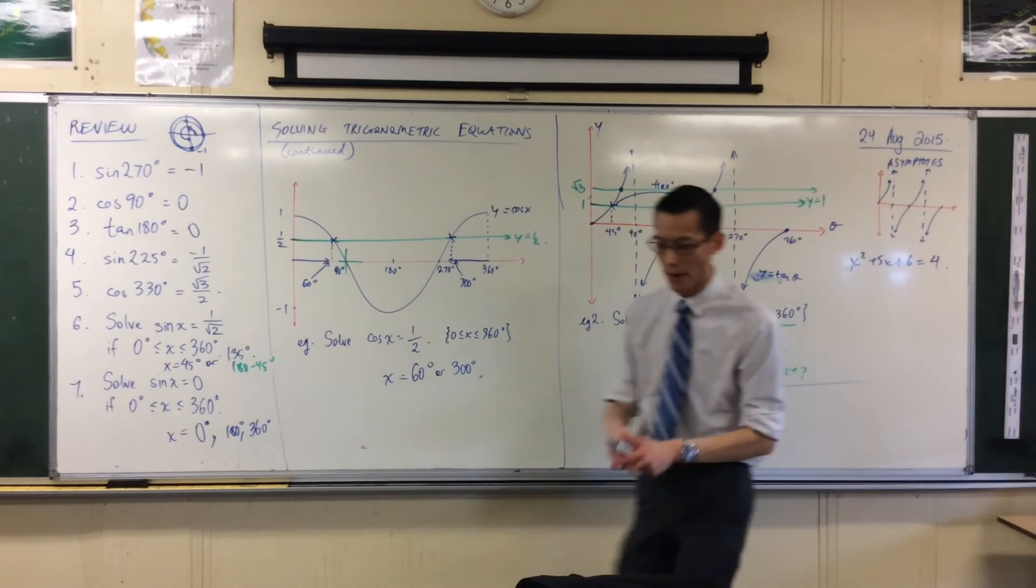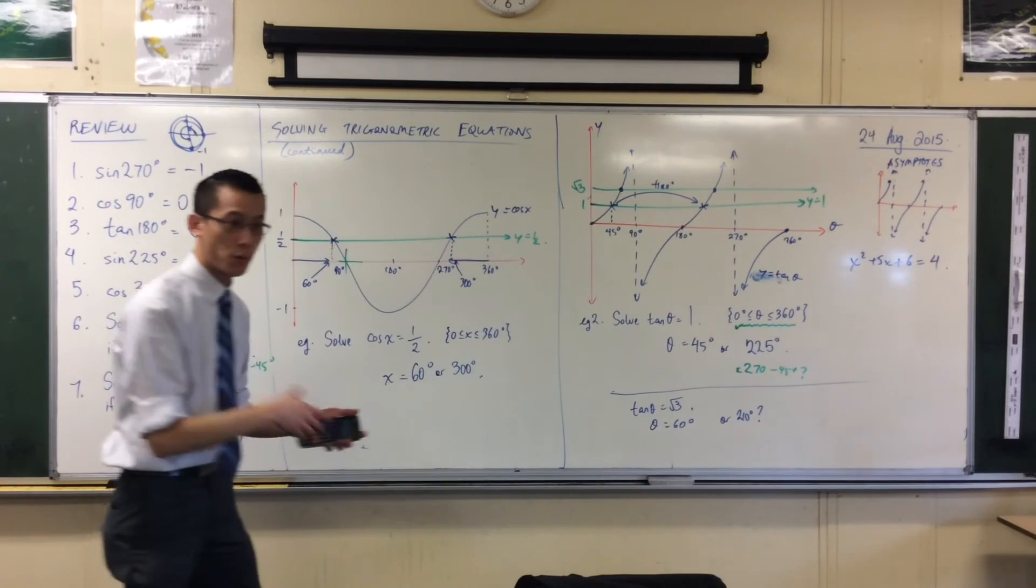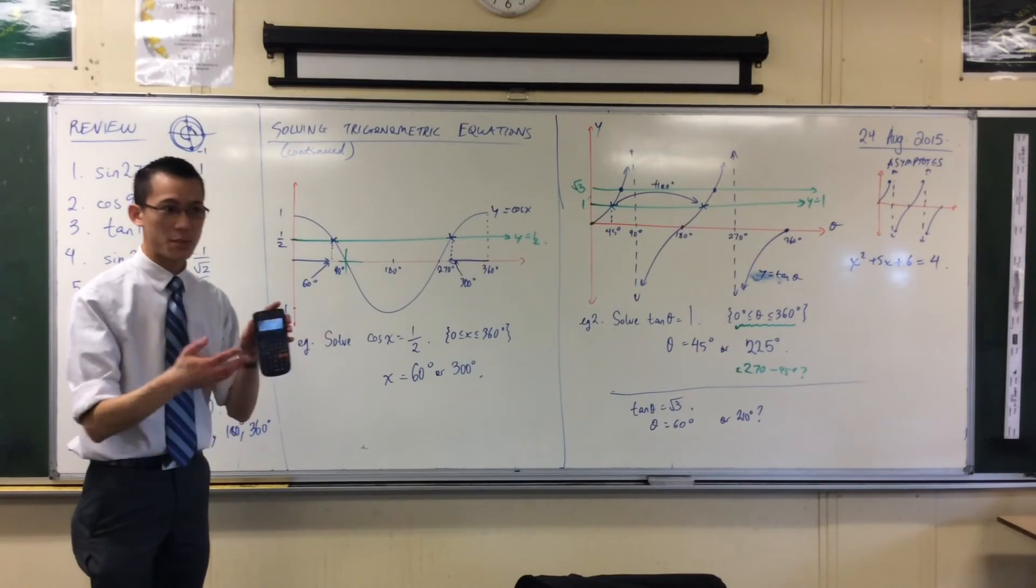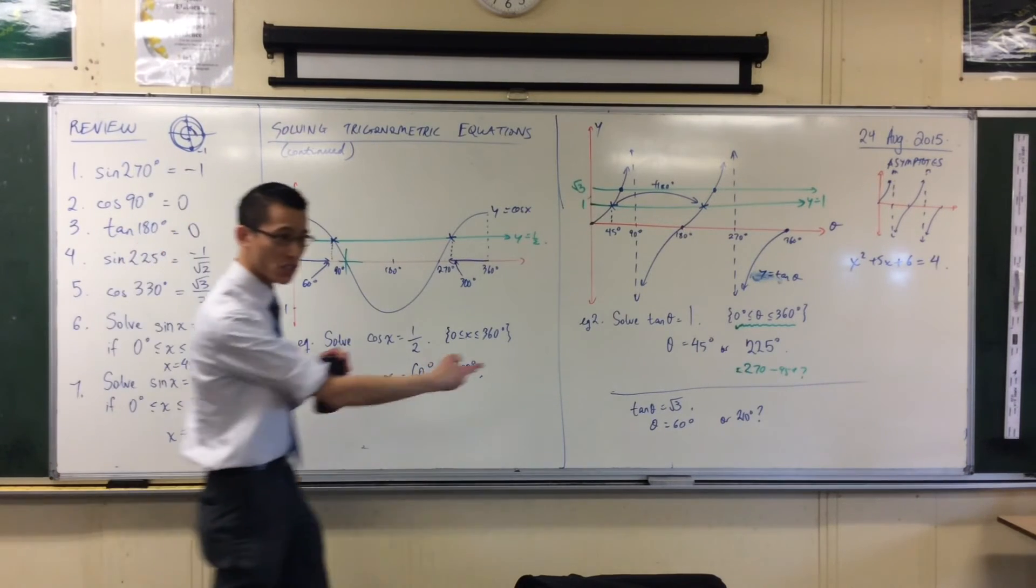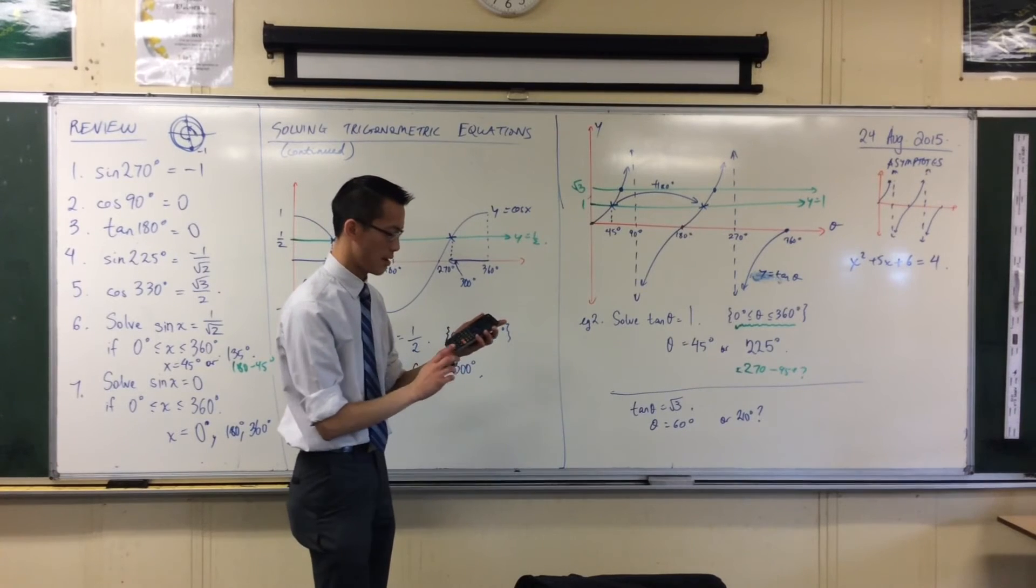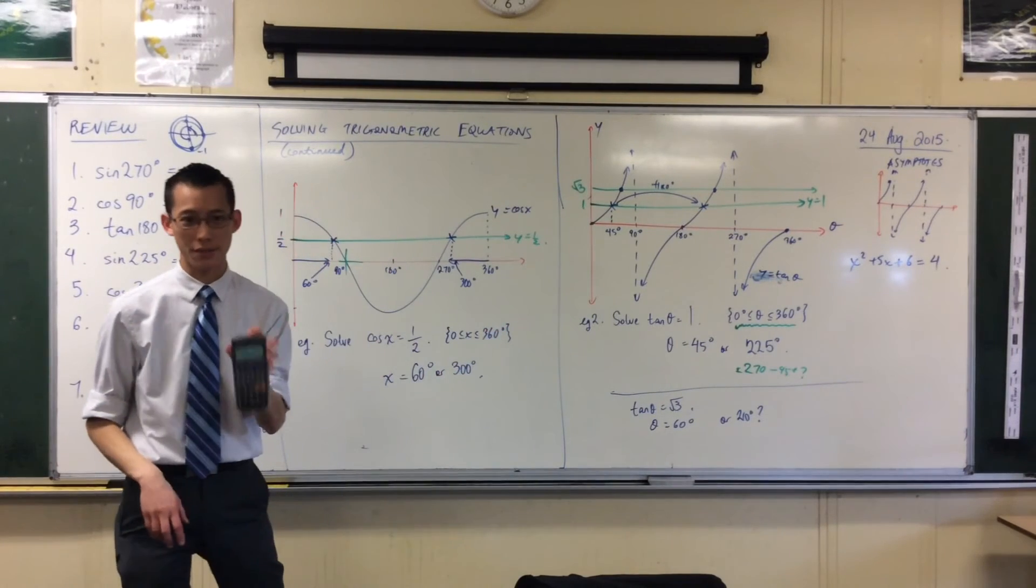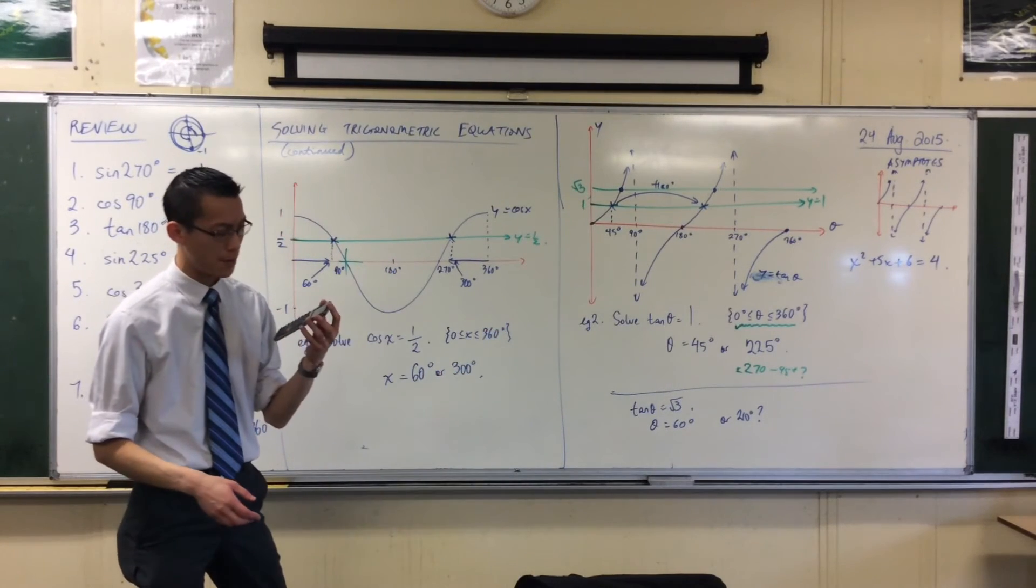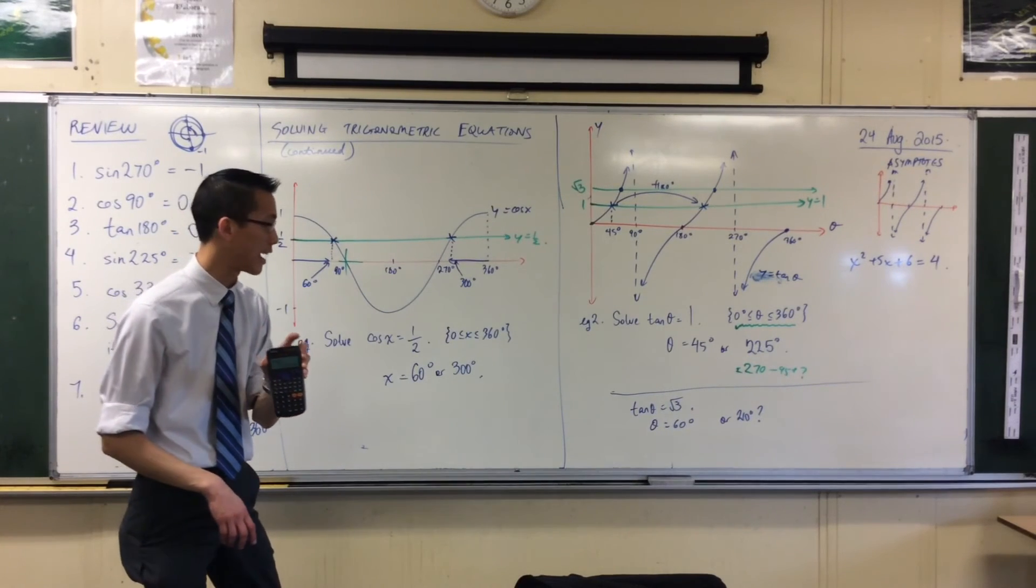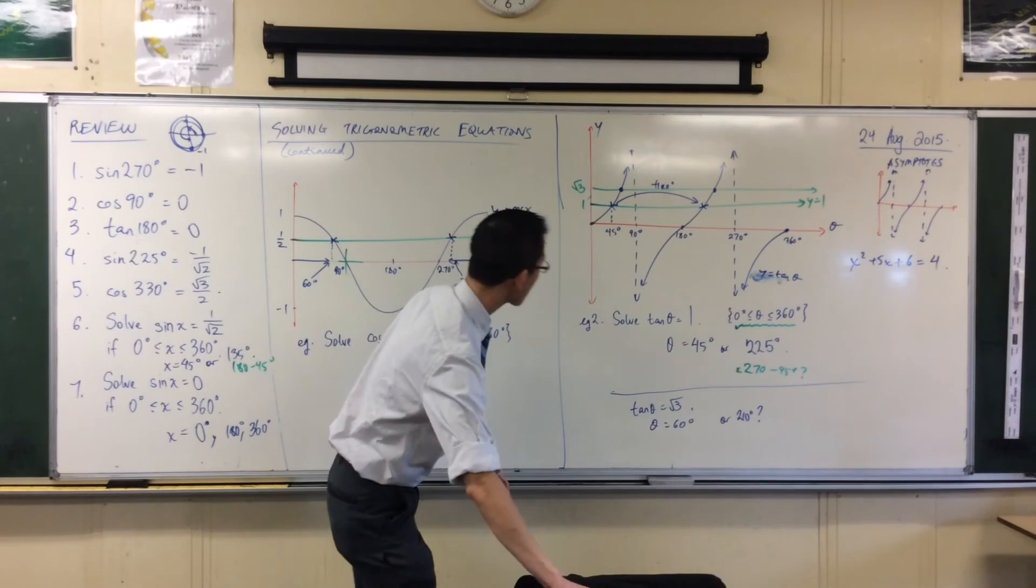So if I go to my calculator, if I put in tan of 60, which is my first solution, it gives me that 1.7 answer. That's root 3. Let's just try 210, just give it a shot. And you get something entirely different. You still get a value, just a completely different one. It's not 1.7 at all. And the reason why is because...